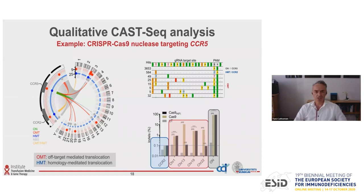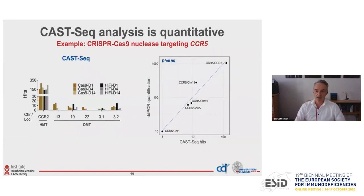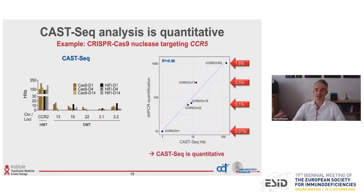Using a high-fidelity version of Cas9 can reduce off-target cleavage at some sites and also prevents those translocations from occurring. Our assay is quantitative — we can put a number on the translocations. The homology-mediated translocation occurred in 1.6% of cells, while the other translocations we identified occurred between 0.5% and 0.01% of cells.